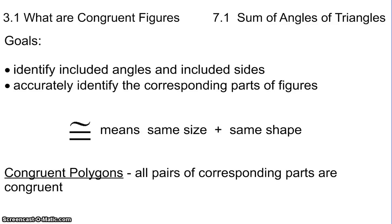Hello everyone, this is Mr. Willem. Today we're going to talk about sections 3.1 and 7.1, talking about congruent figures and sums of angles in a triangle, as well as greater-than included angles and sides in a triangle.